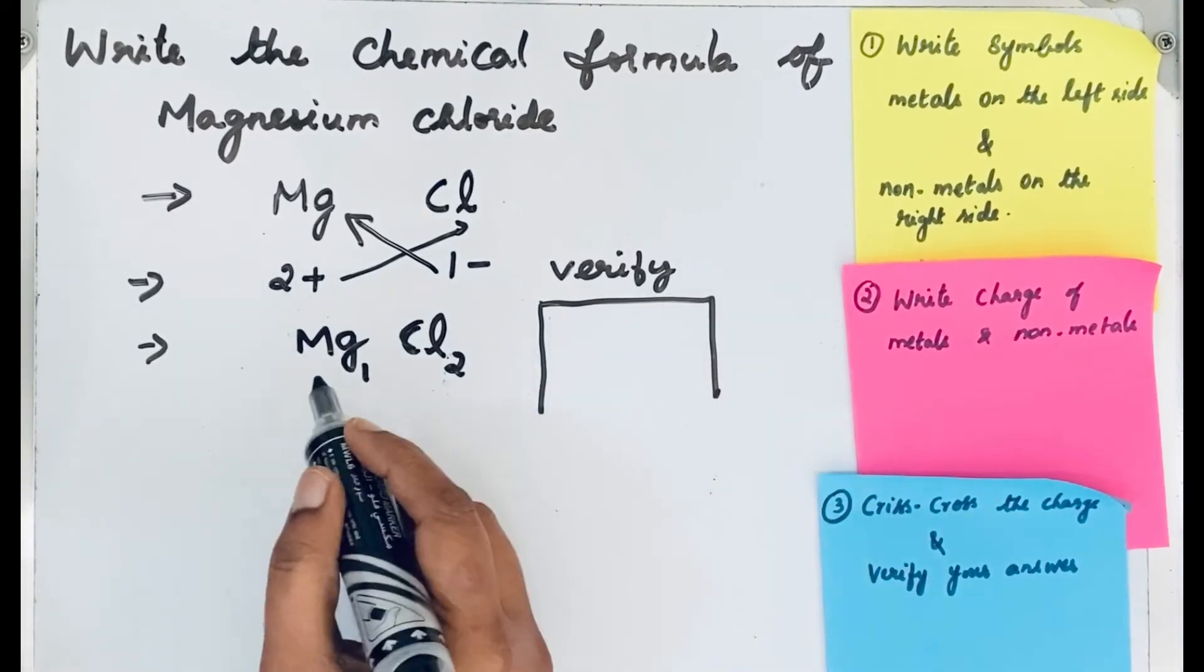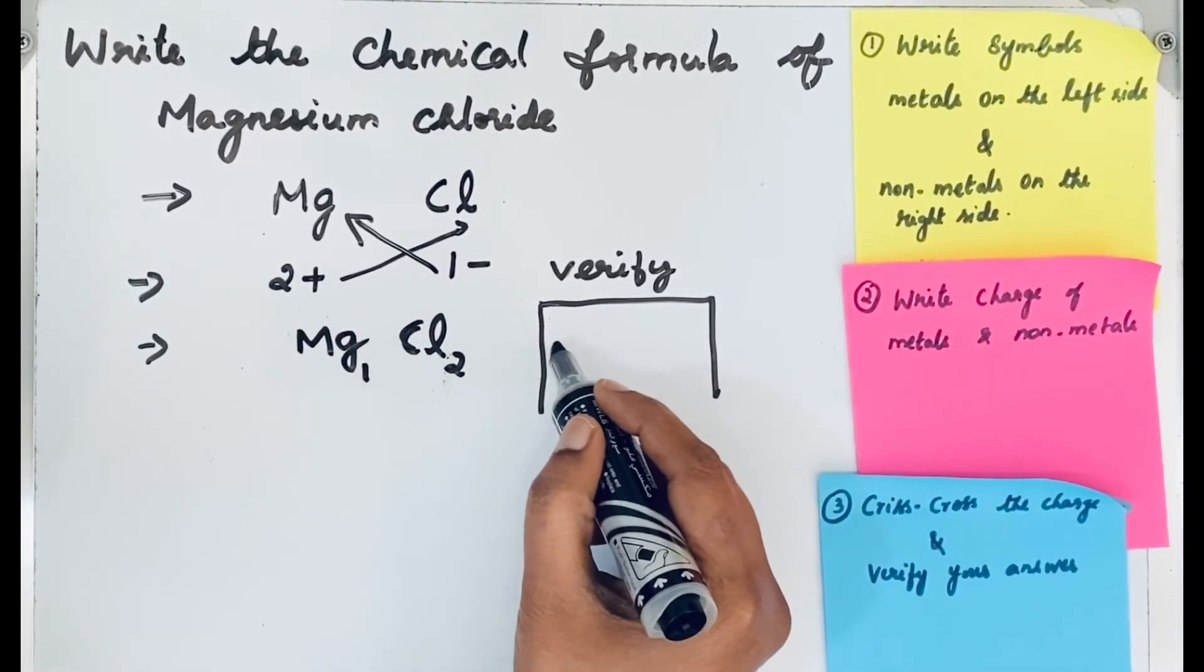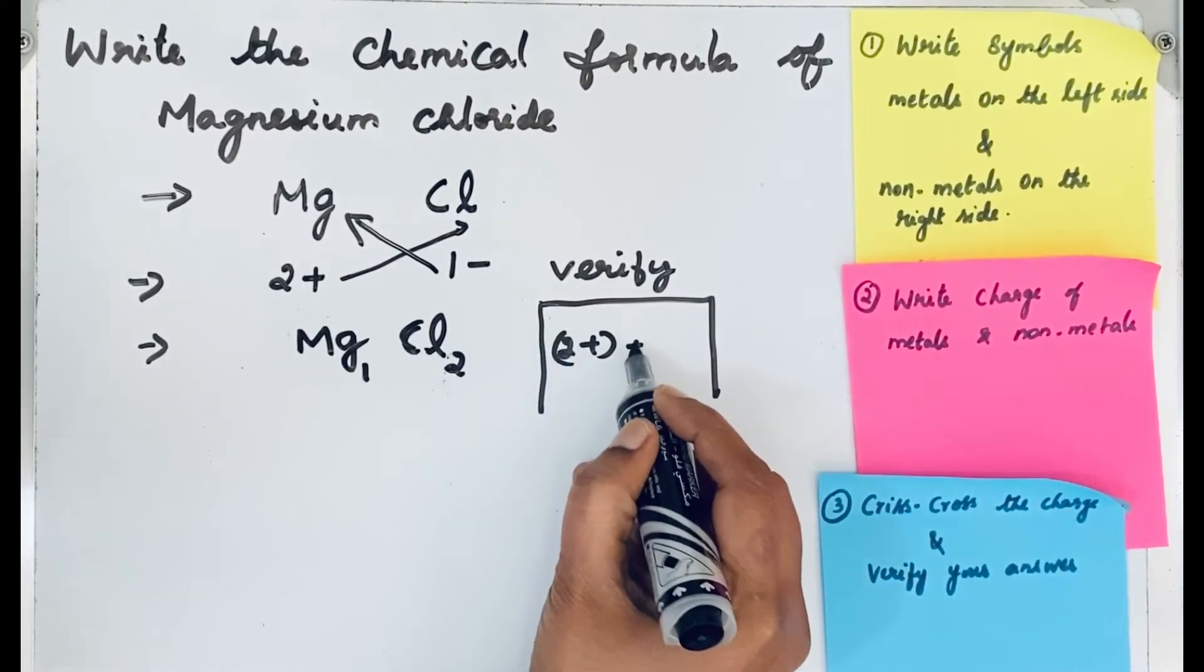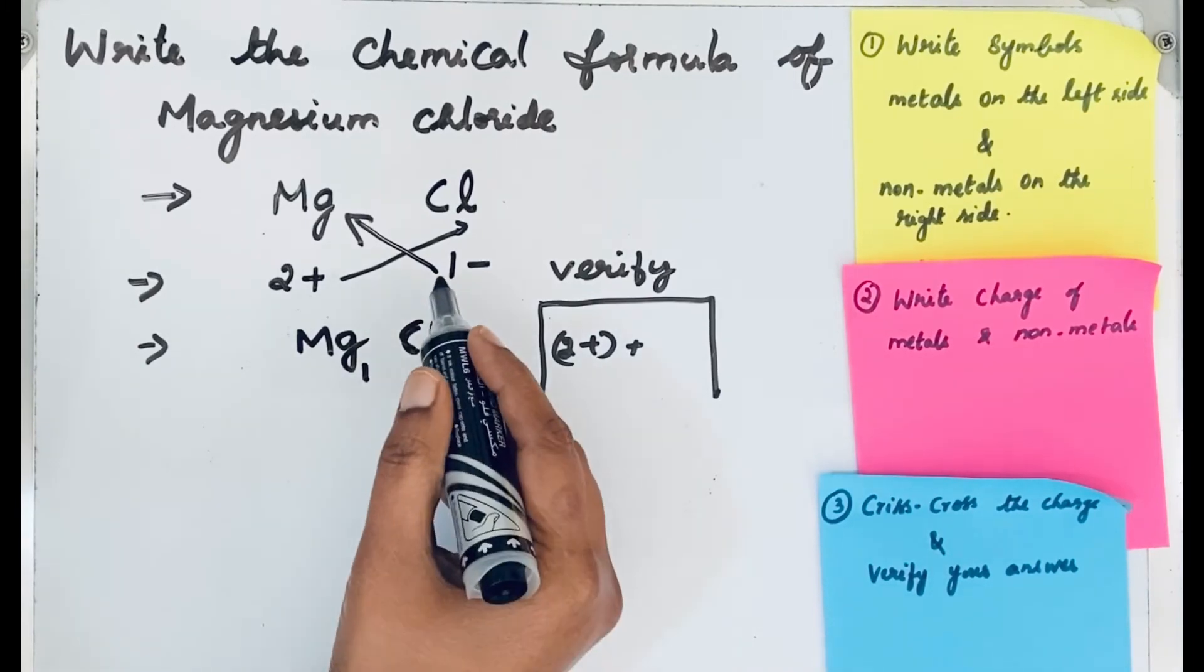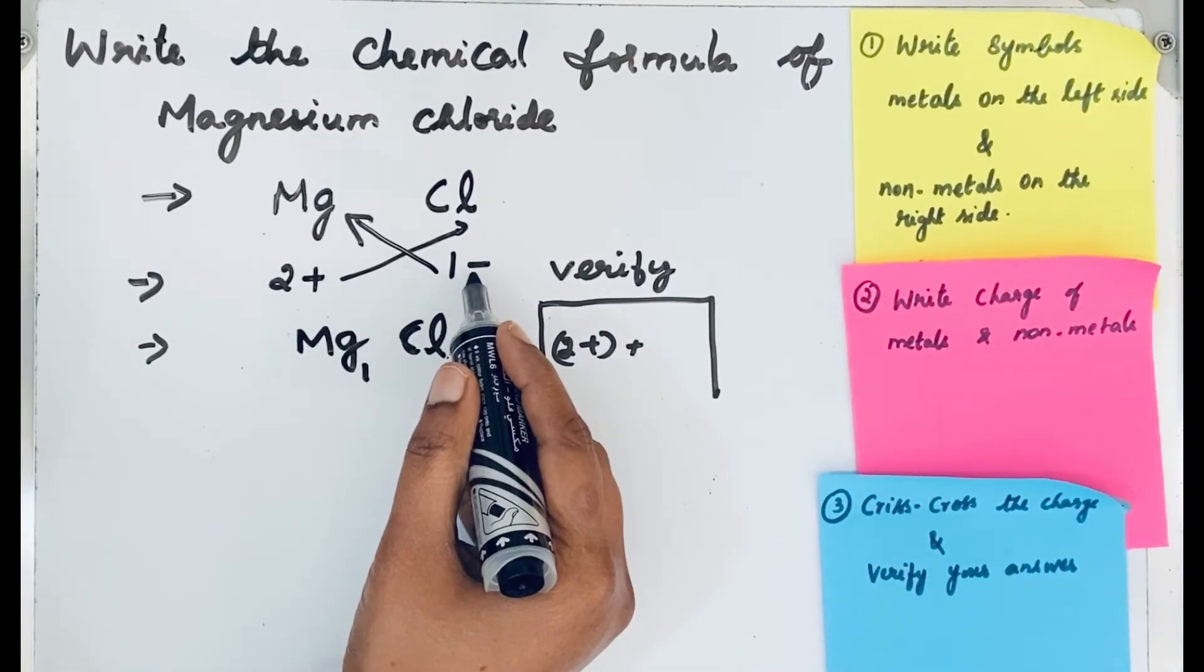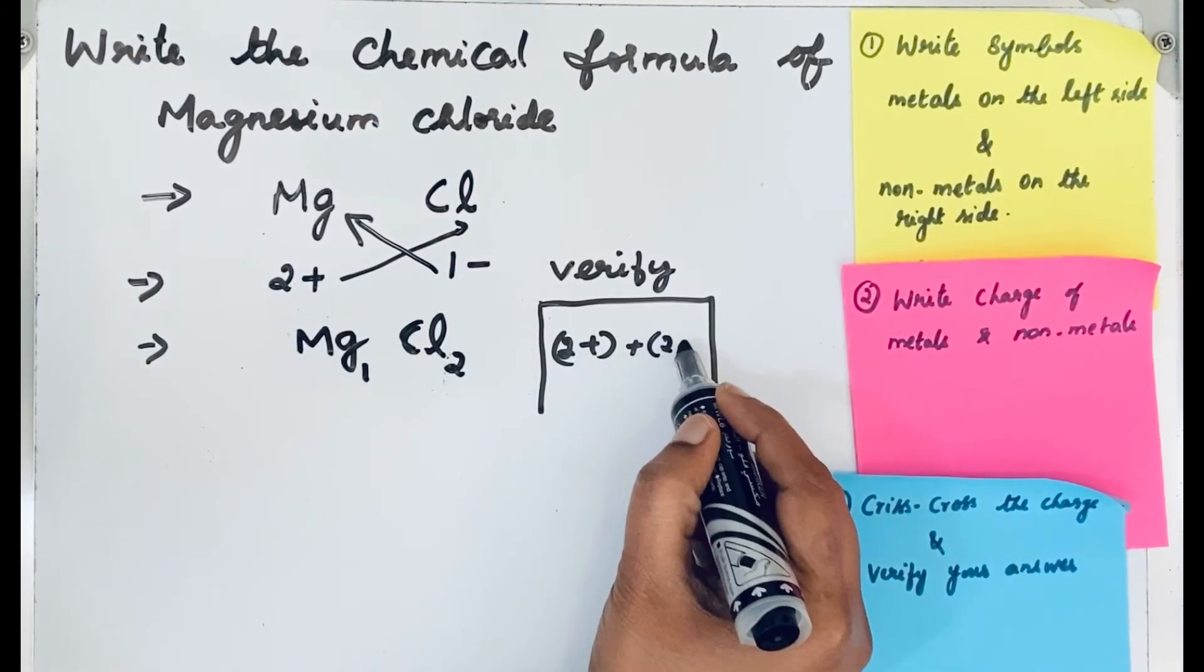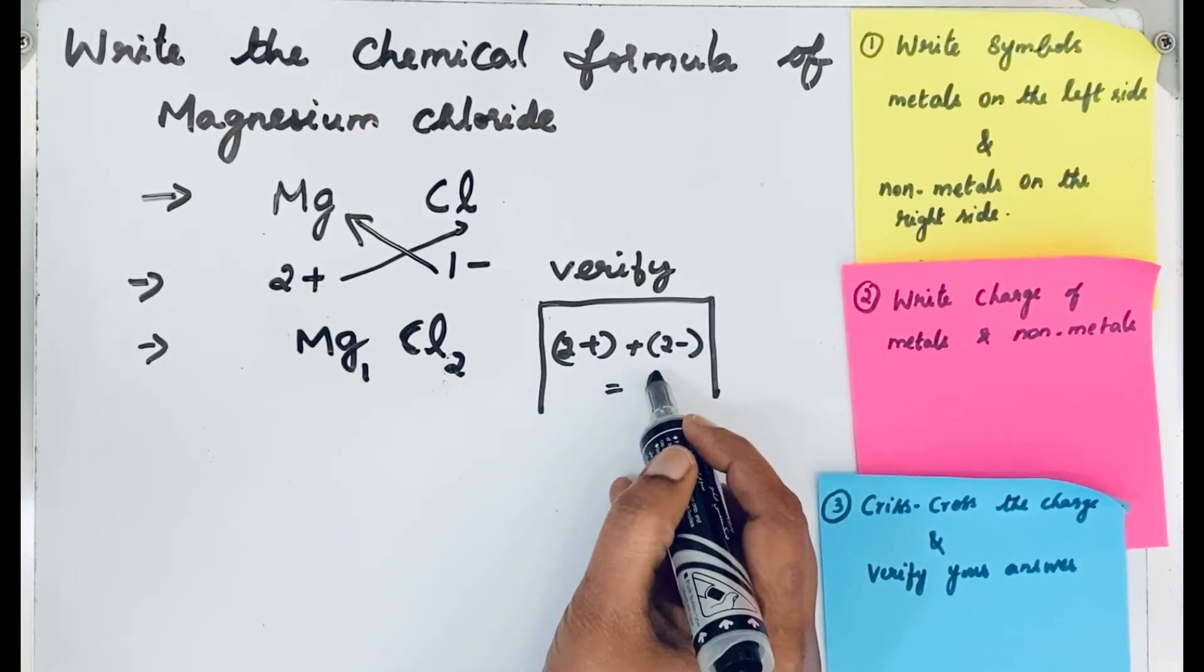If magnesium is 1, then the charge is 2+, so 1 × 2+ equals 2+. For chloride ions, it is 2, and the charge is 1-, so 2 × 1- equals 2-. Now add 2+ and 2-. When we add, we get 0.